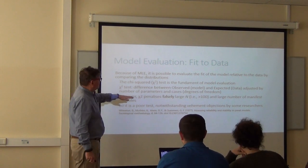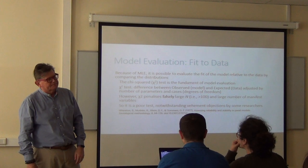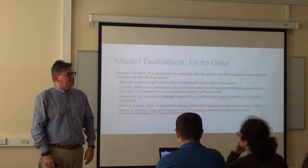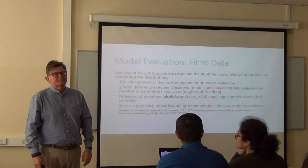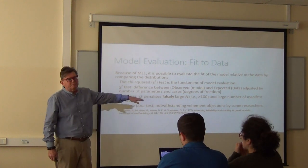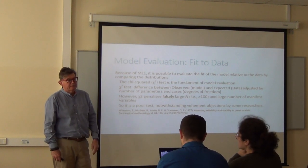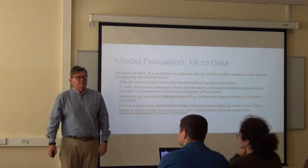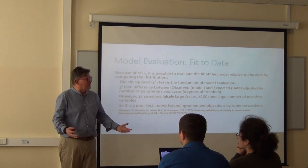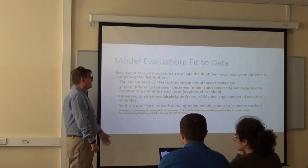So degrees of freedom matters and power matters. But Chi-square hates big numbers, big models. And factor analysis is a big number thing, so it shouldn't surprise you that many models will be rejected by the Chi-square test. The p will be less than 0.05, meaning the difference is statistically significant, simply because you did what factor analysis tells you to do — got big numbers to analyze complicated data. So it's like shooting yourself in the foot. It's a poor test.